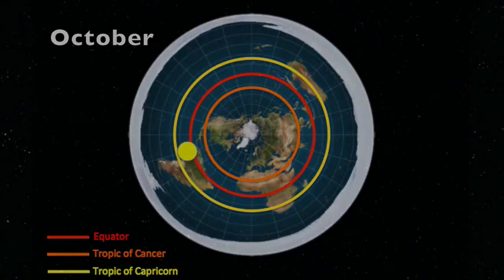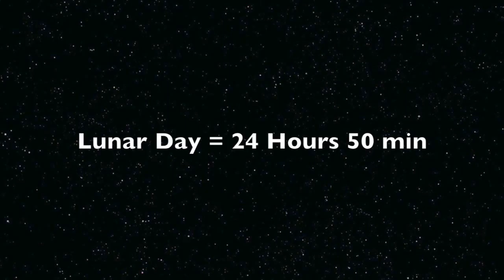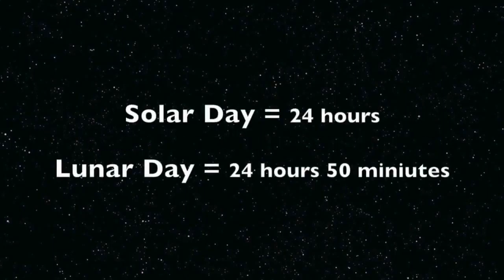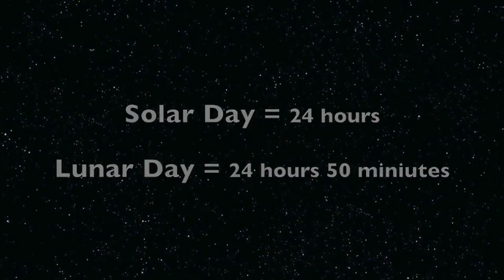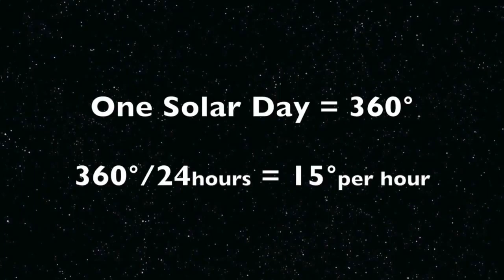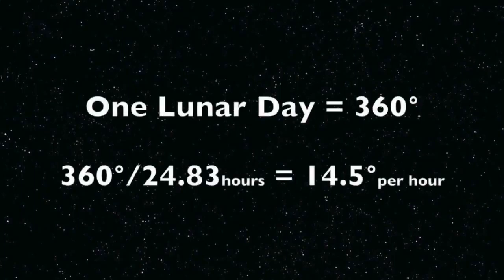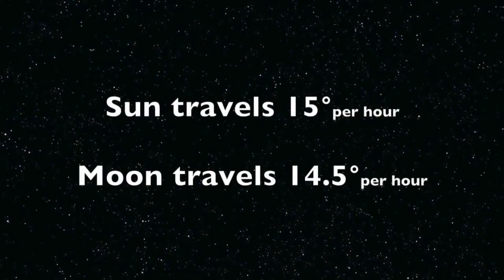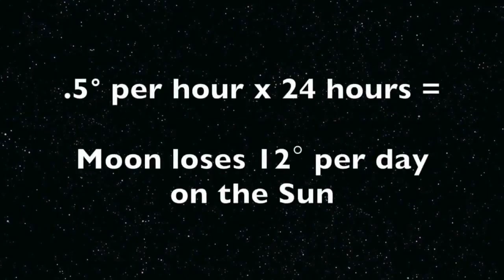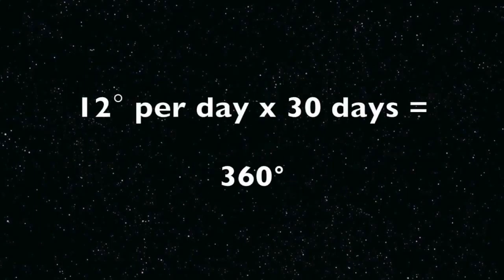The moon also circles above the flat earth, but the moon is slightly slower than the sun. The moon takes 24 hours and 50 minutes to circle the flat earth — that's what's called a lunar day. So where the sun takes 24 hours to make one 360-degree circle, which is 15 degrees an hour, the moon takes 24 hours and 50 minutes, which equates to only 14.5 degrees per hour. Because it's slightly slower, the moon loses half a degree on the sun per hour, which equals 12 degrees per day. This 12-degree loss causes the lunar phases.